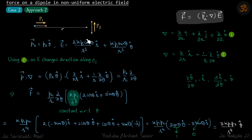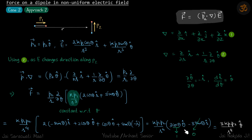We defined the orientation of p2 but kept E general, so now we can put the specific value of θ. In this case θ = 0 because p and r are parallel, so cosθ = 1 and sinθ = 0. Our answer becomes 3k·p1·p2 / r⁴ θ-cap.